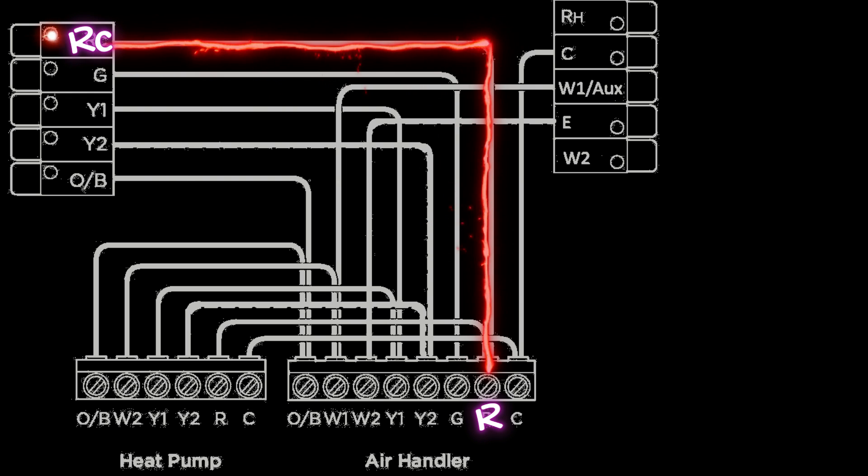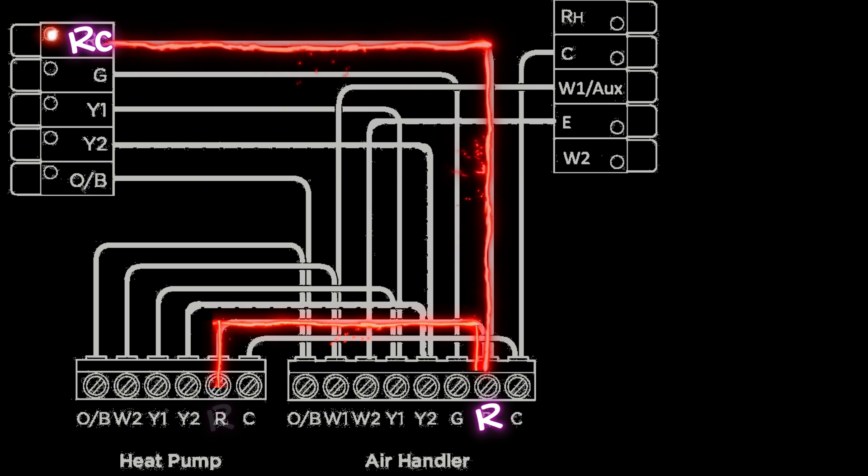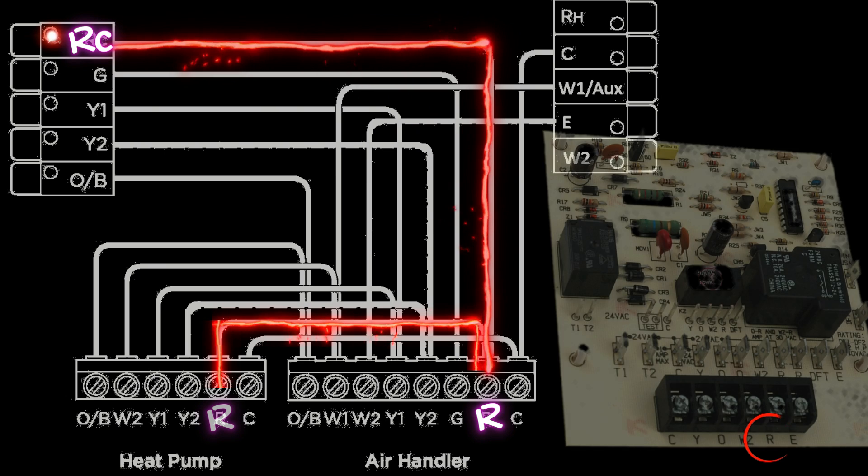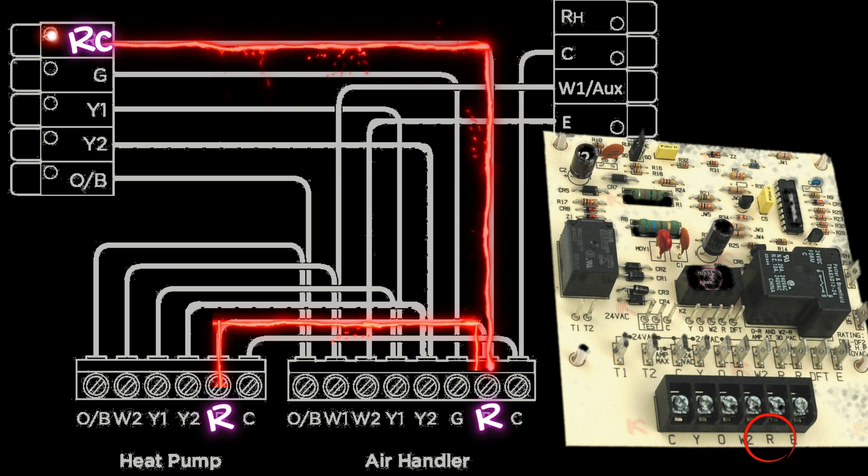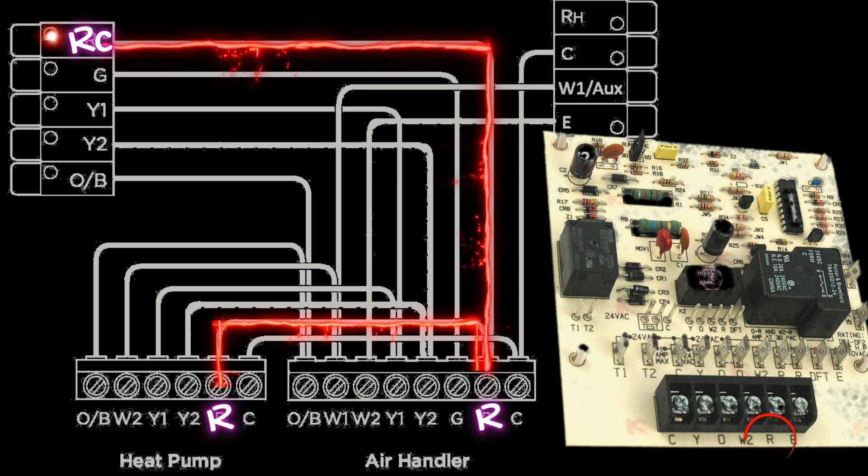Now in addition to this wire coming off the R terminal on the control board in the indoor unit, we're going to have a second wire coming off of that same terminal that is going to go to the R terminal on a defrost control board on the outdoor unit. And the whole purpose of this wire is to power the defrost control board itself. It's an electronic device and obviously needs power to function.